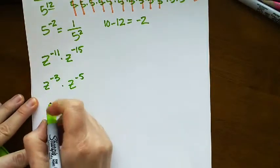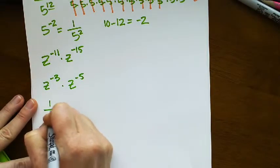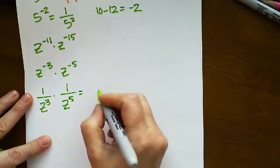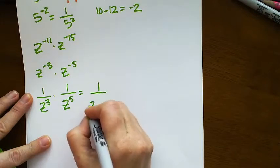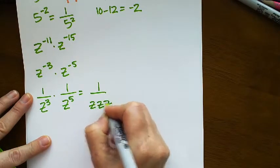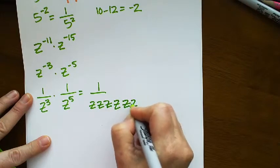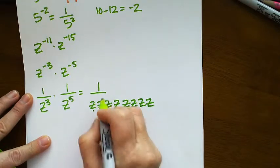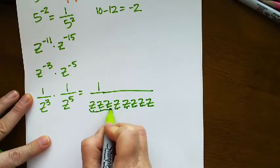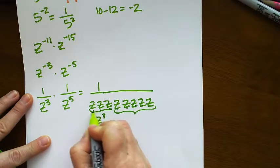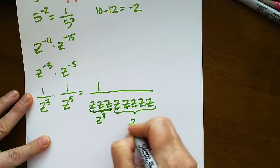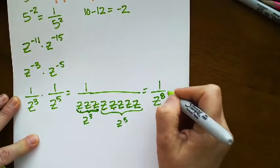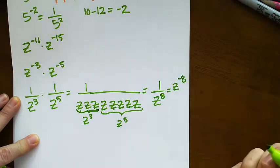Okay, so that would be 1 over z to the 3rd times 1 over z to the 5th, which is 1 over z times z times z, z times itself 1, 2, 3, 4, 5, 6, 7, 8 times. Here's z to the 3rd and then here's z to the 5th. So that would be 1 over z to the 8th, which is z to the negative 8.